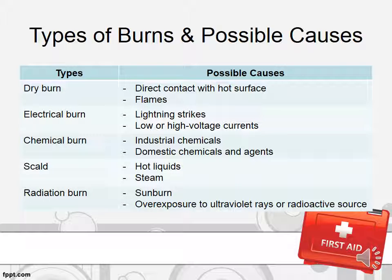There are multiple types of burns. First, dry burn due to direct contact with a hot surface or flames. Second, electrical burn due to exposure to lightning strikes or low or high voltage currents. Third, chemical burn due to exposure to industrial or domestic chemicals and agents. Fourth, scald burn due to exposure to hot liquids such as coffee, hot oil, and also steam. The last one is radiation burn, which the most common type is sunburn, or can be caused by exposure to ultraviolet rays or radioactive sources such as x-ray.